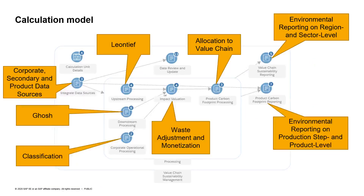The calculation model consists of several areas. In the integrated data sources area, the relevant company data, the secondary environmental data such as input-output tables from the OECD, as well as the fine-grained product and process data are read. In upstream processing, the carbon and energy footprint at regional and industrial sector level is calculated based on the sales and secondary environmental data using the Ghosh algorithm.